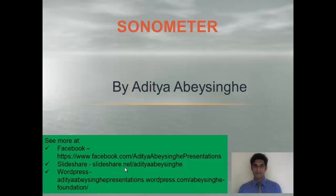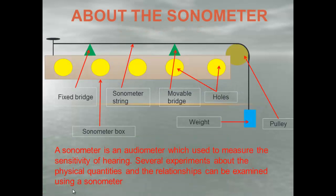In this video I will explain three experiments that you can do with the sonometer. To begin with, you need to understand what a sonometer is, when we can use a sonometer, and why we use one. We use a sonometer, like the resonance tube, to identify the characteristics of waveforms. The sonometer looks like this — you have the sonometer box with some holes.